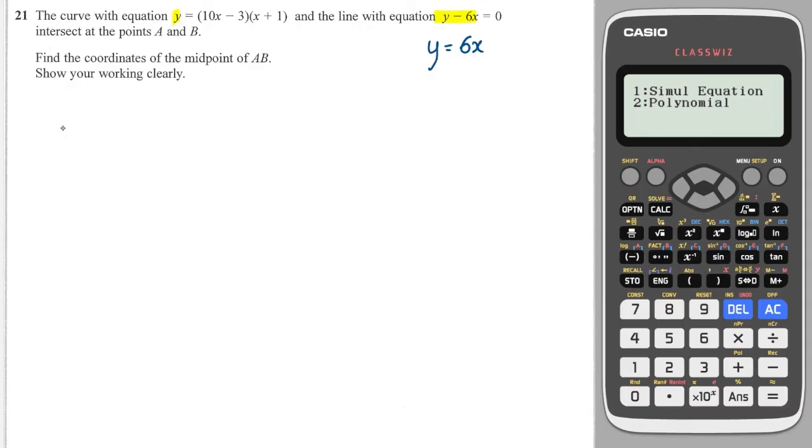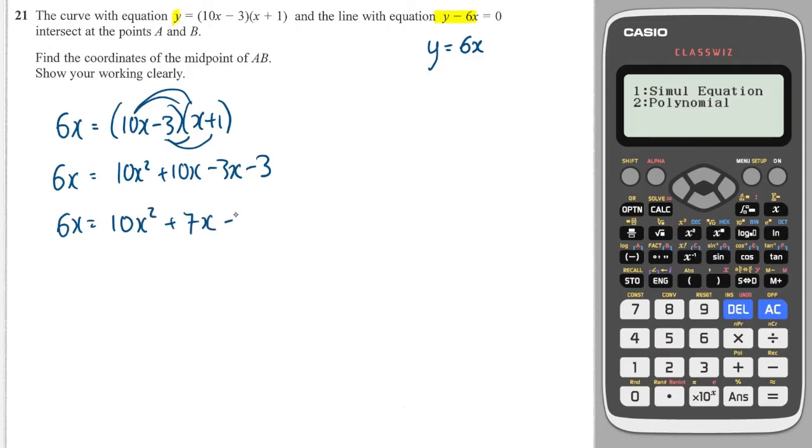And this gives me 10x minus 3x plus 1. I'll expand these brackets to get 10x squared plus 10x minus 3x minus 3. 10x minus 3x is 7x. So I can write this. And then subtracting 6x from both sides gives me 10x squared plus x minus 3.